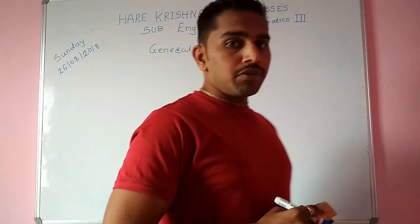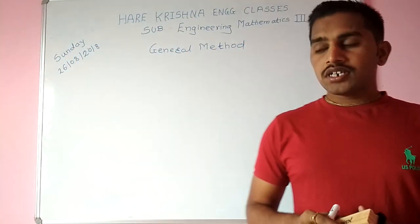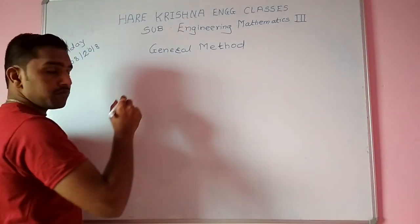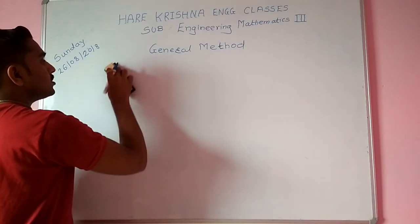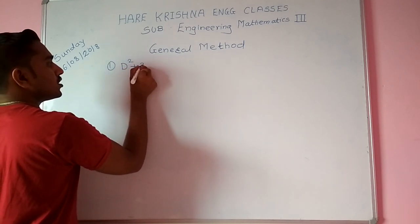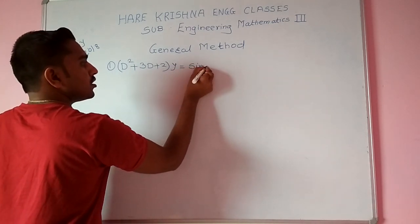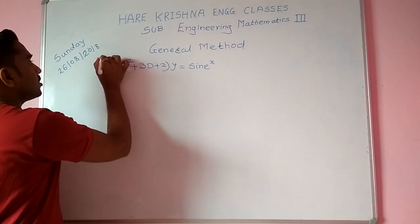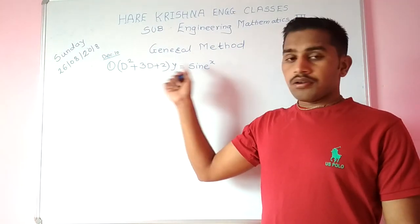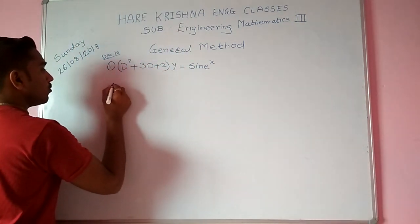In the previous lecture, friends, we have been seeing different types of problems using the general method and shortcut method. Today we discuss one problem that was asked in the December 2010 exam. We take the example: (D² + 3D + 2)y = sin(eˣ), which was asked in December 2010 and in previous exam papers for four marks and eight marks. It should also appear in online exams, so please focus on that.